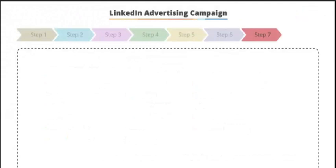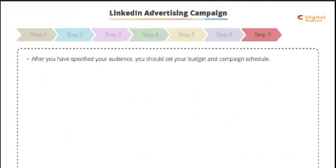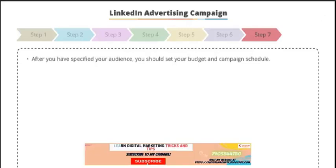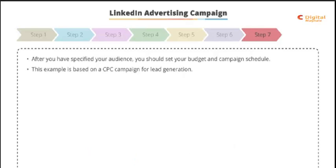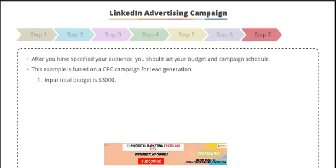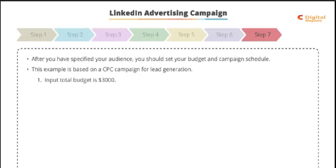Step seven: we're happy with the audience we specified, and now it's time to set our budget and campaign schedule. In this example, we're going to opt for a cost-per-click campaign as we're looking to generate leads. We're going to input our total budget of $3,000. We can also set a daily limit in terms of clicks in order to make our budget last as long as possible. LinkedIn is an extremely expensive platform in comparison with other networks, and it's very easy to spend your entire budget very quickly.